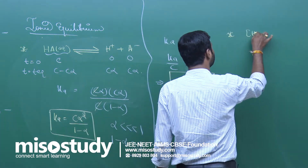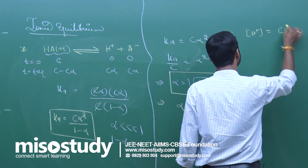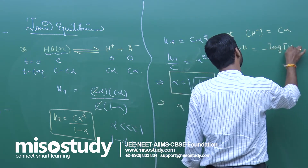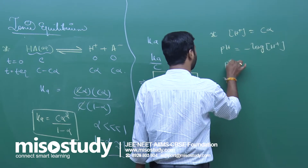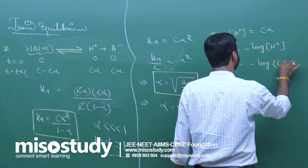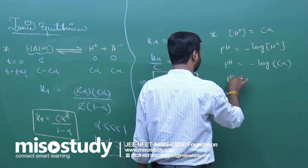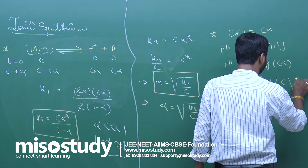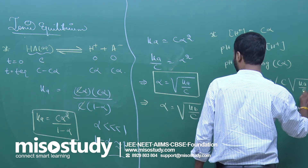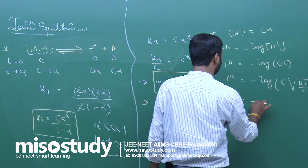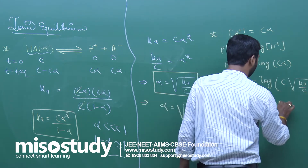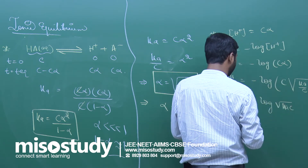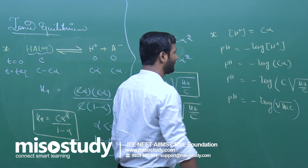We know the H⁺ ion concentration is equal to C·alpha, and pH equals minus log of H⁺ ion concentration. So pH equals minus log of C·alpha. Since alpha equals root under K A upon C, pH equals minus log of root under K A times C.